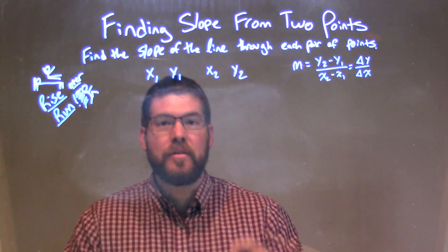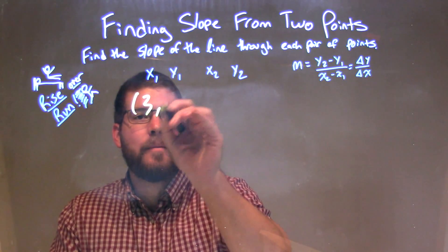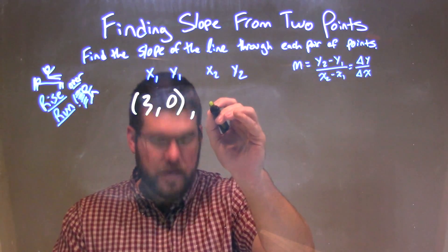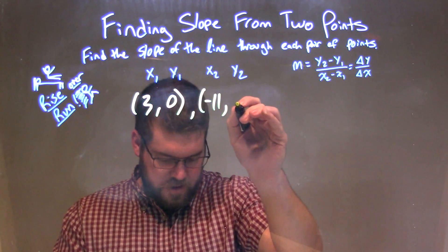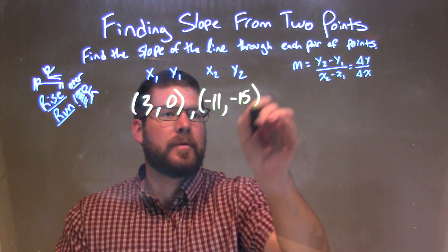So if I was given this pair of points: (3, 0) and (-11, -15).